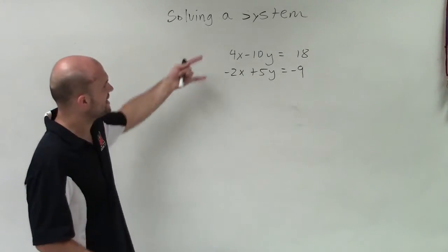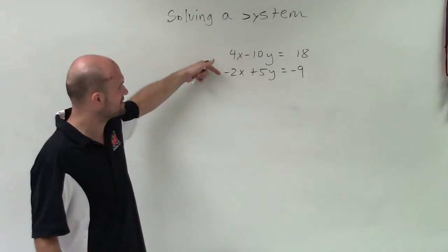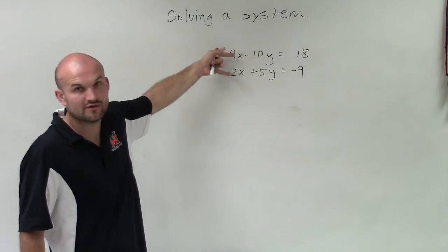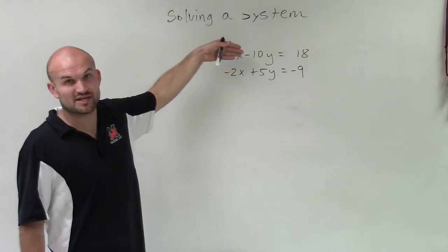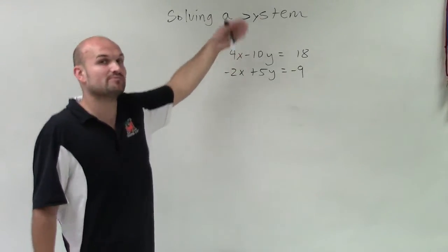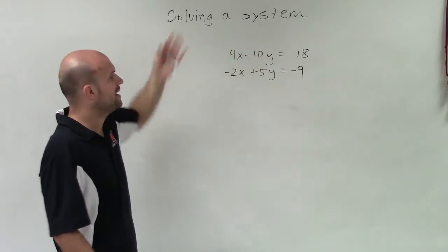And what I notice is that if I multiply my bottom equation by 2, I'll have the exact same coefficient, regardless of the sign. Or if I divide the top equation by—or multiply, I'm sorry, multiply by 1 half, or divide by 2, I'd have the same equation.